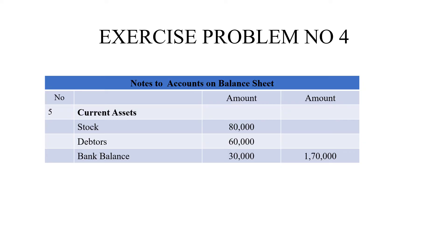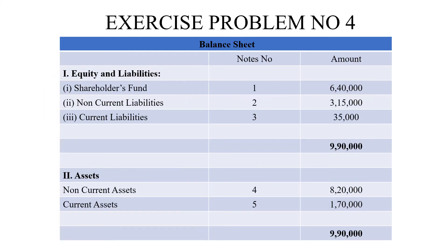Now we prepare the balance sheet. On the equity and liabilities side: shareholders' fund is 6,40,000; non-current liabilities is 3,15,000; and current liabilities is 35,000 - giving a total liabilities side of 9,90,000 rupees. On the assets side: non-current assets are 8,20,000 and current assets are 1,70,000, totalling 9,90,000. This is the actual format of a balance sheet according to corporate companies.